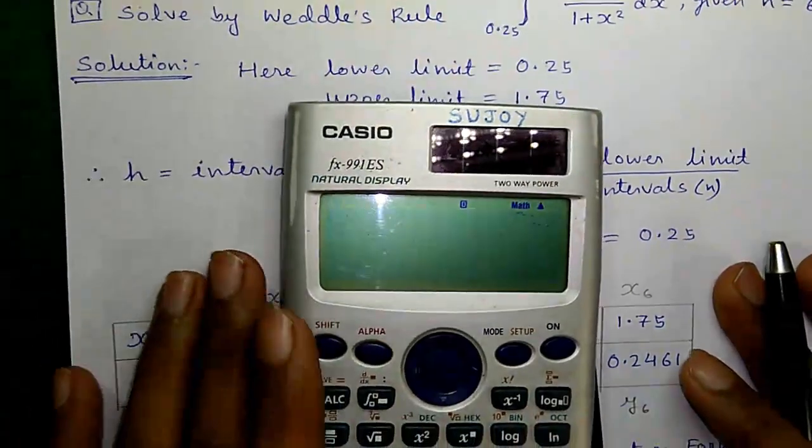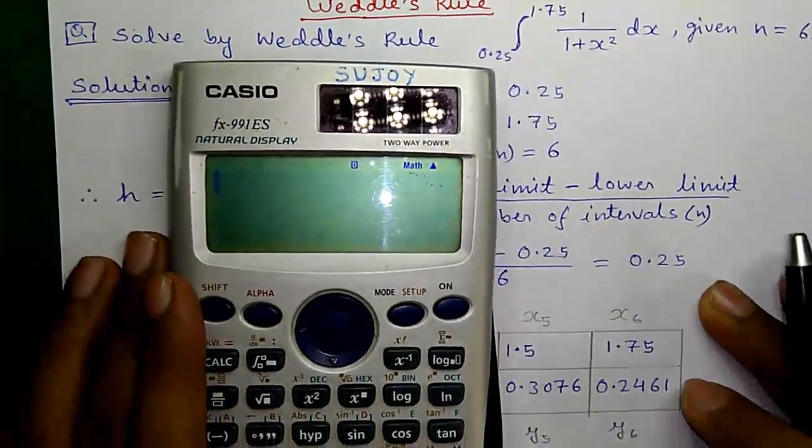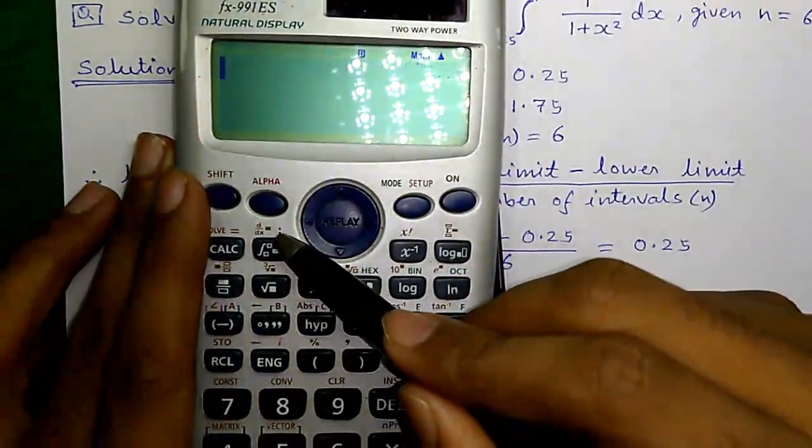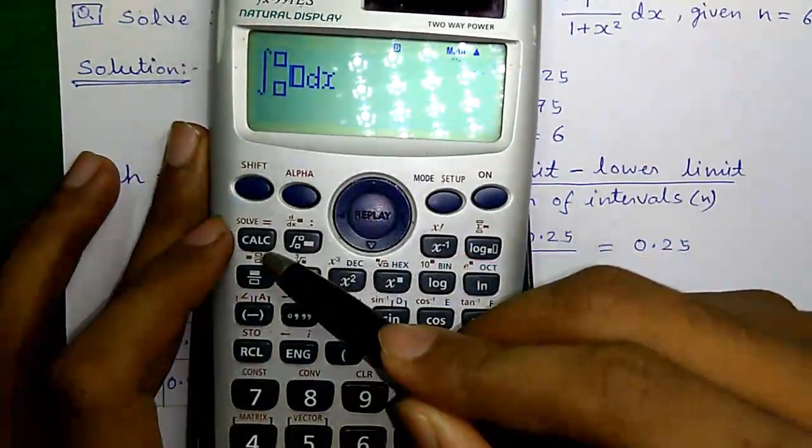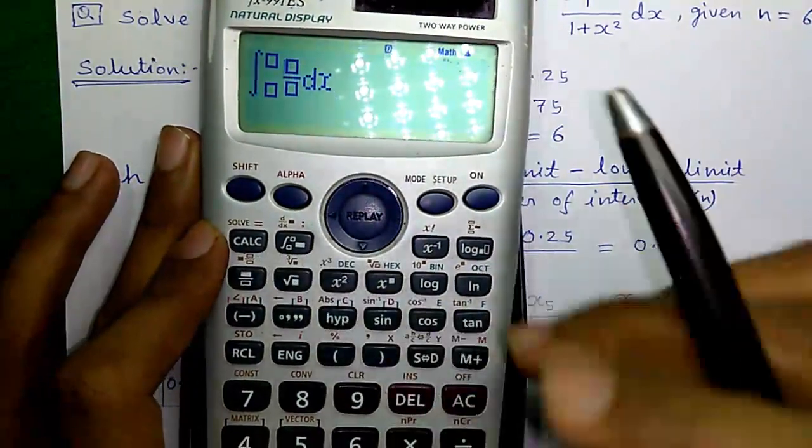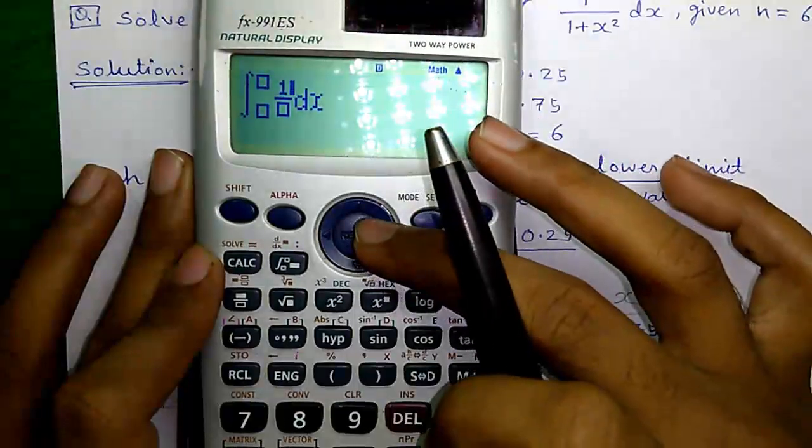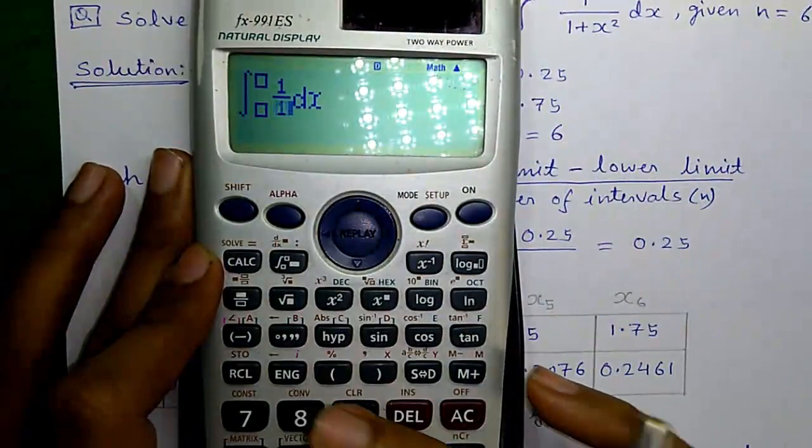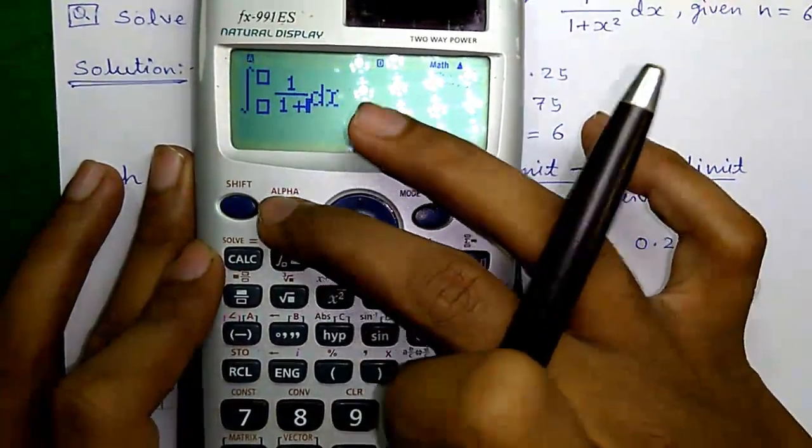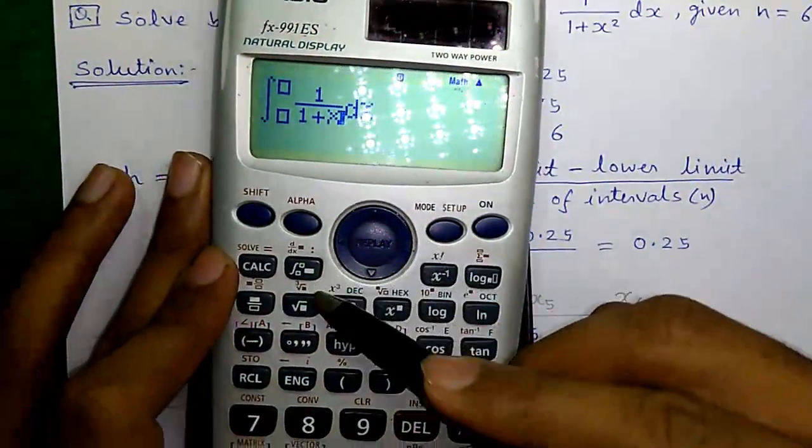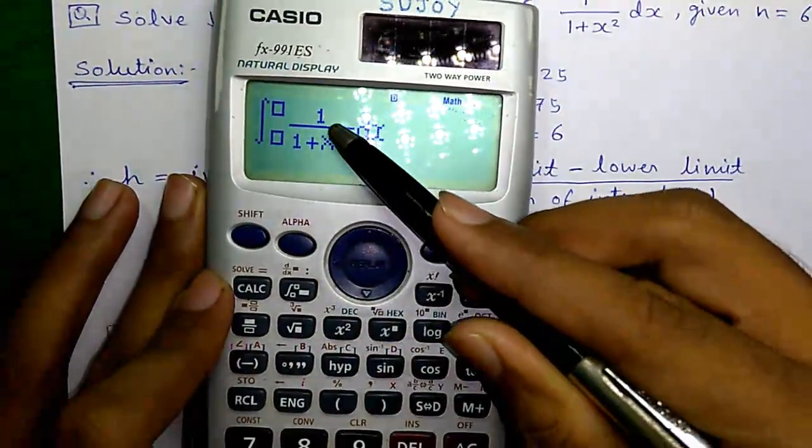First of all let me show you how to solve this problem directly on the scientific calculator. For that press this integration button, next press this fraction button, then 1, scroll down, divided by 1 plus, press alpha and this button for x and this button for square.